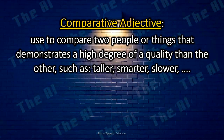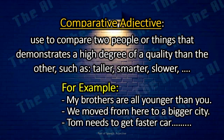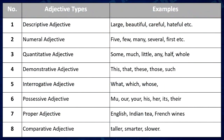A comparative adjective is used to compare two people or things, demonstrating a higher degree than the other, such as taller, smarter, slower, etc. For example: My brothers are all younger than you. We moved from here to a bigger city. Tom needs to get a faster car for the race. And that finishes our lesson about adjectives.